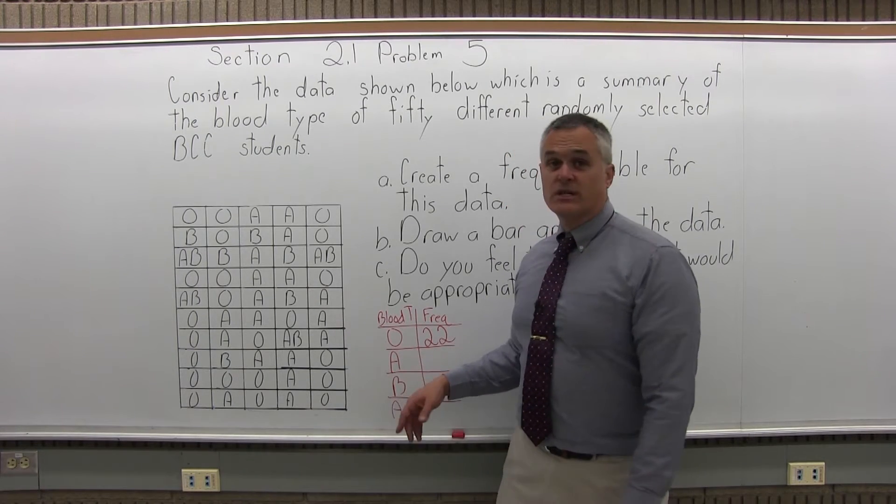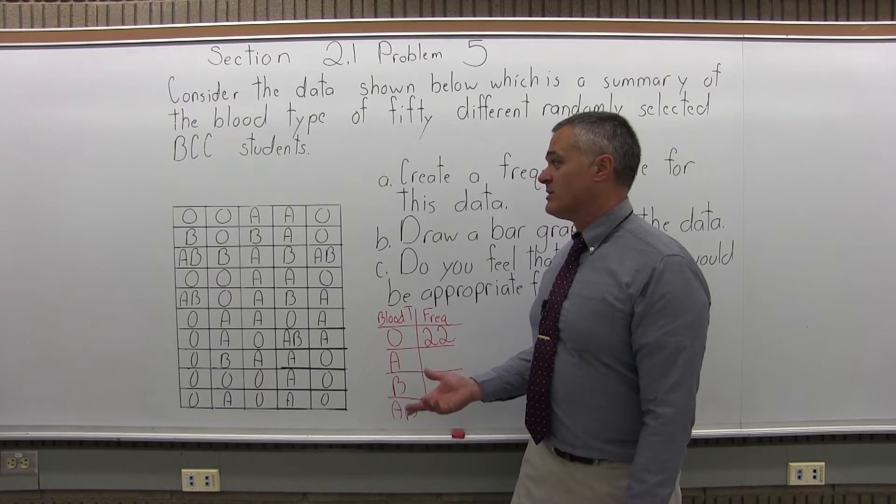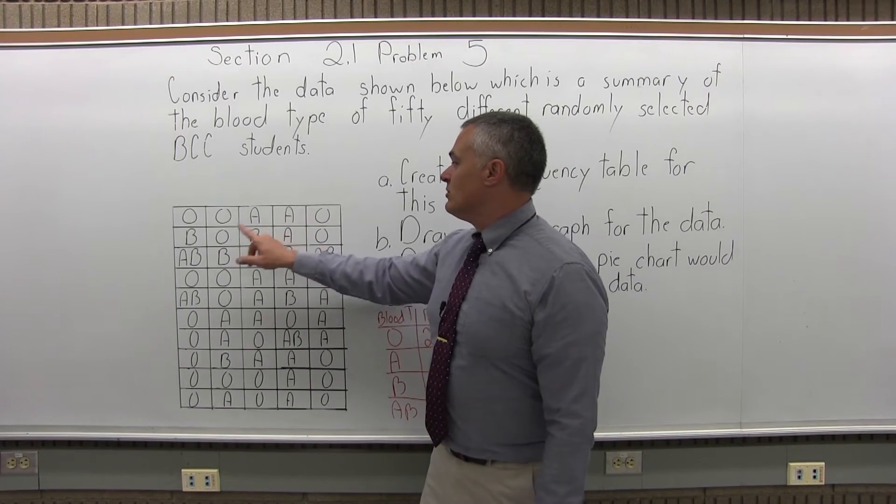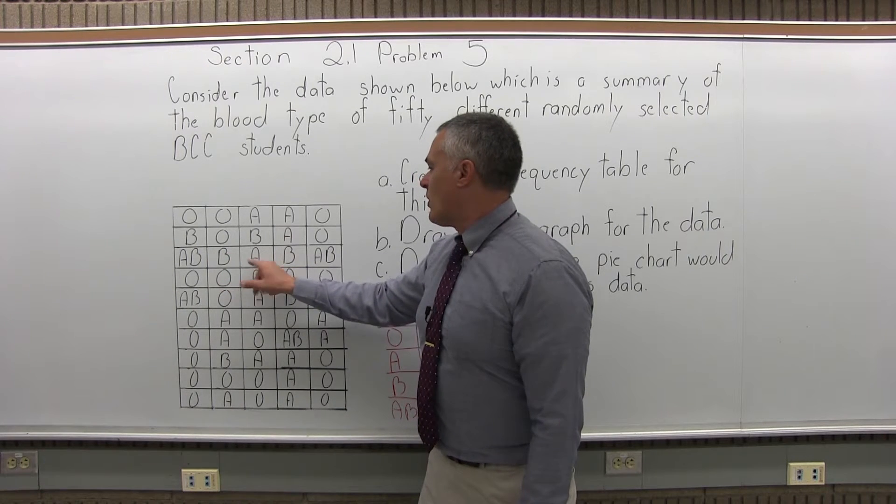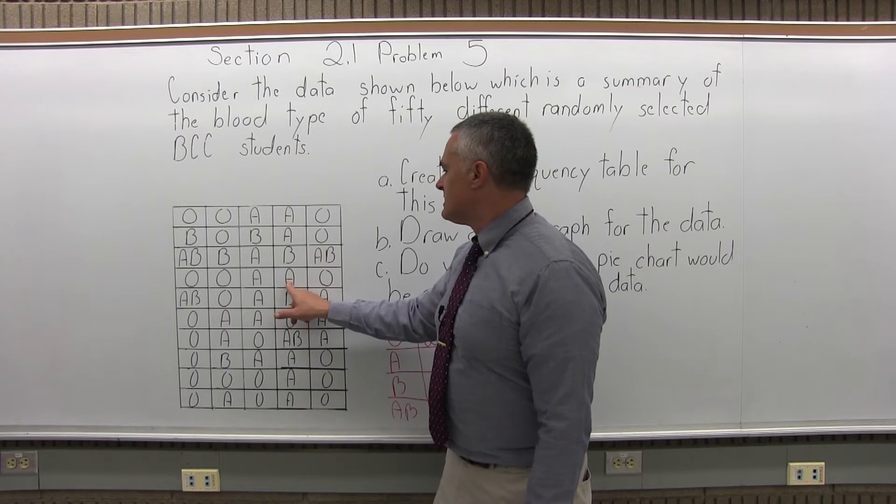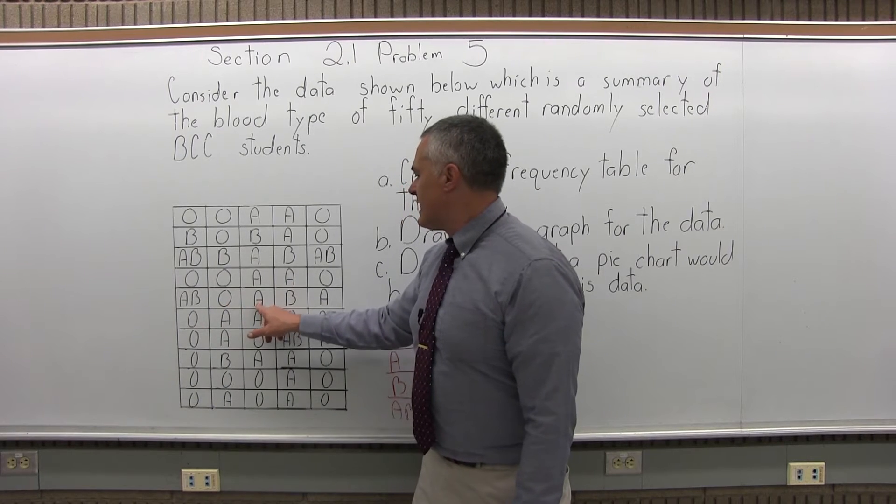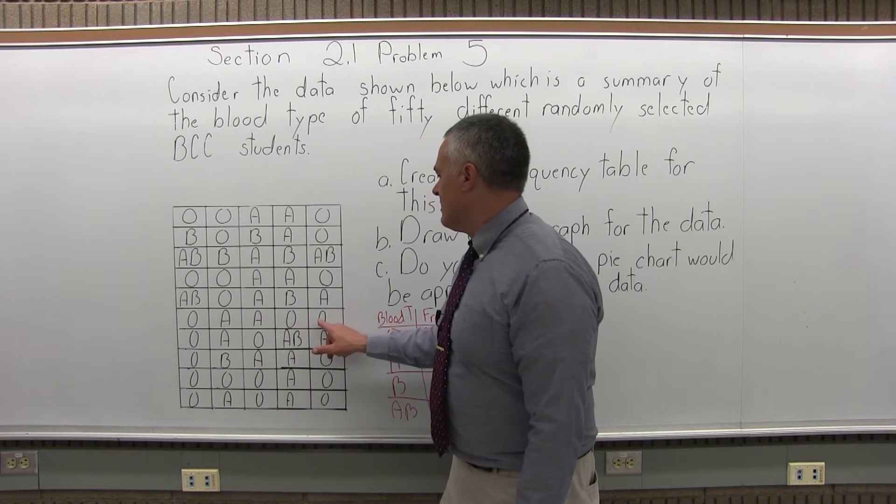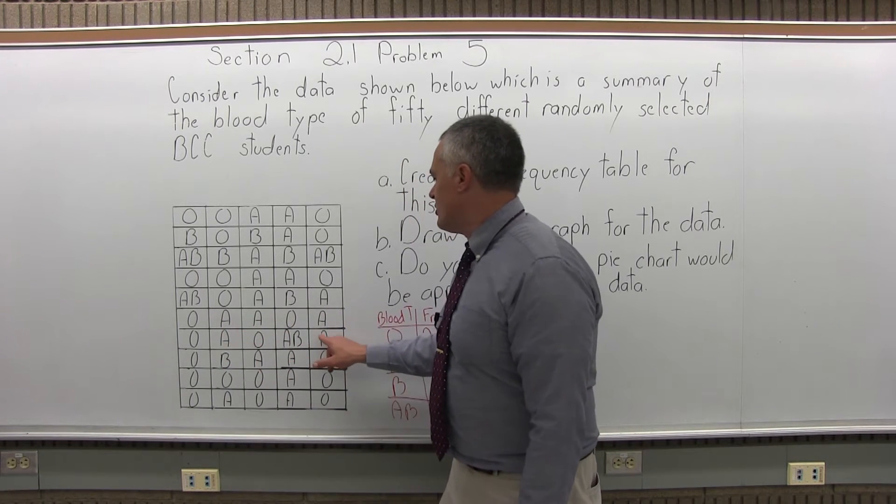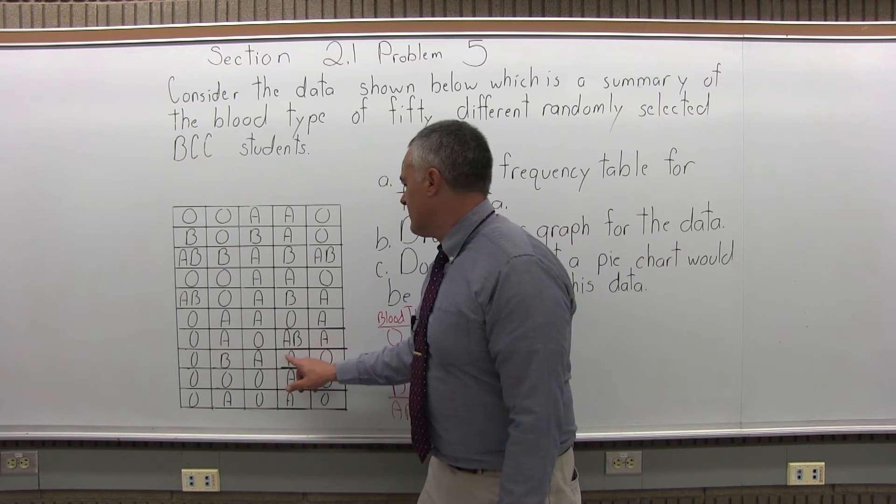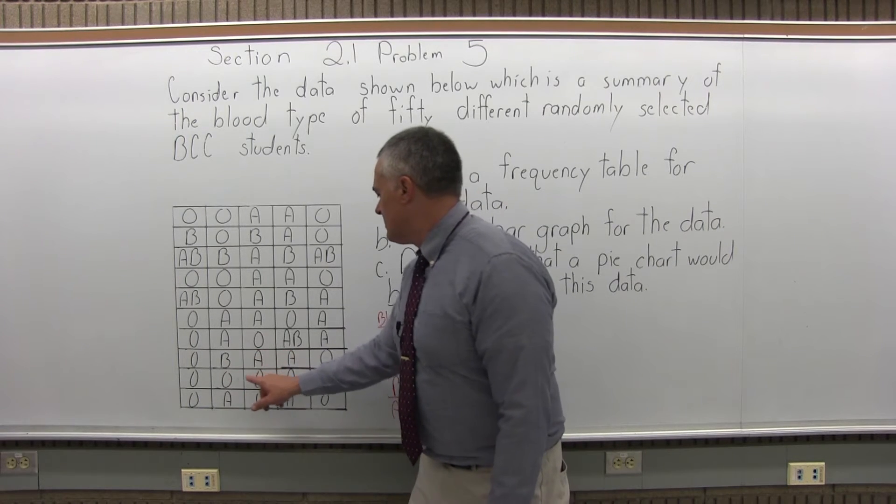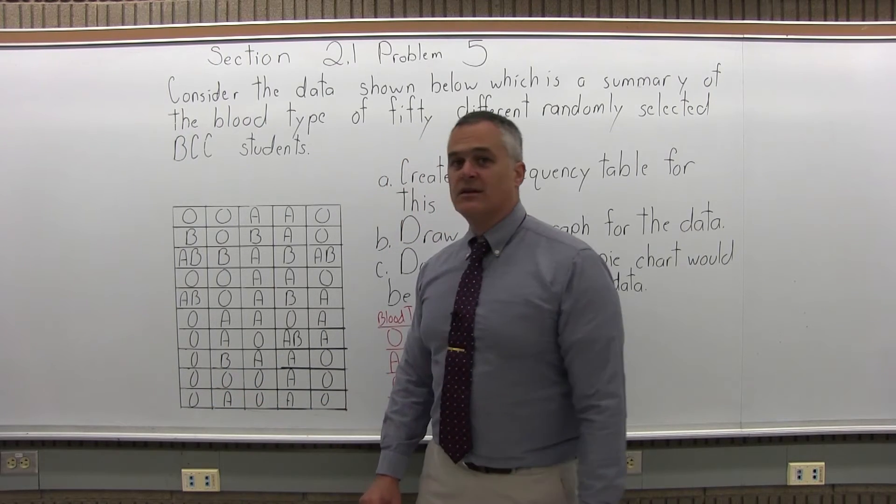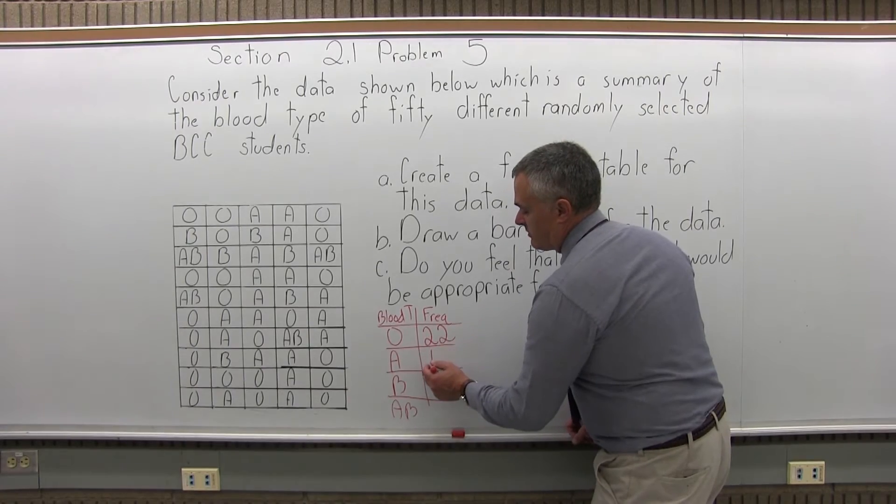The next one we have listed is A. So again, systematically go through and count how many occurrences of blood type A. Take your time, be careful. 1, 2, 3, 4, 5, 6, 7, 8, 9, 10, 11, 12, 13, 14, 15, 16, 17, 18. There are 18 occurrences of blood type A so that will be the frequency, 18.